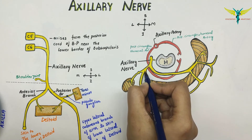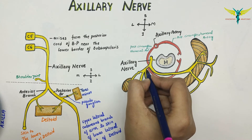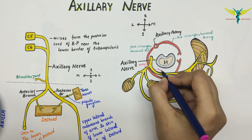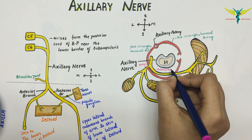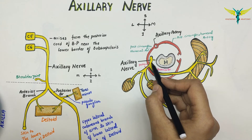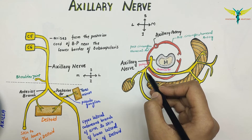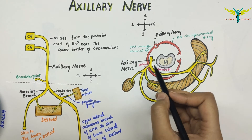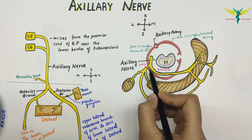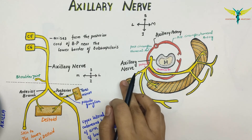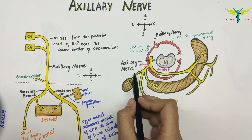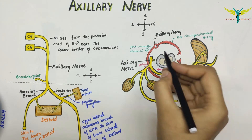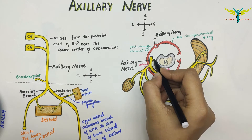This is the posterior branch of the axillary nerve, and this is the anterior branch. The axillary nerve, after passing below the subscapularis, runs backwards to pass through the quadrangular space along with the posterior circumflex humeral artery. So the axillary nerve is a content of the quadrangular space. After passing through, it gives an articular branch to the shoulder joint.